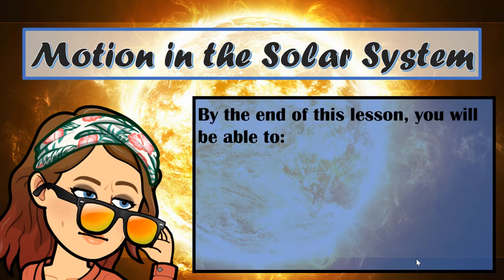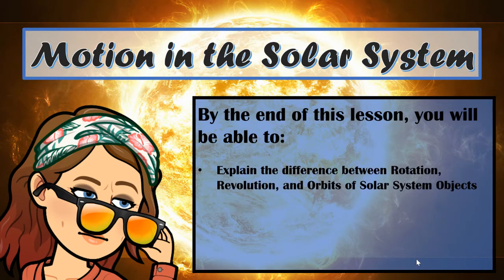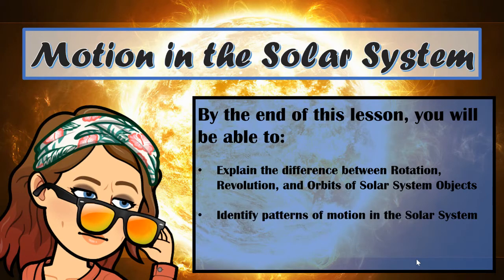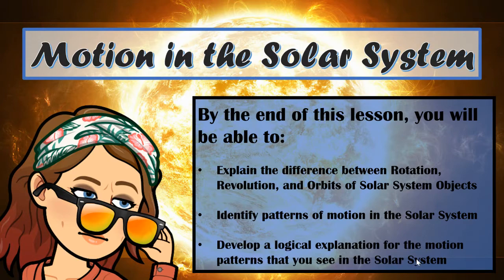By the end of this lesson, you will be able to explain the difference between rotation, revolution, and orbits of solar system objects. You'll also identify patterns of motion in the solar system and develop a logical explanation for the motion patterns that you see in the solar system.